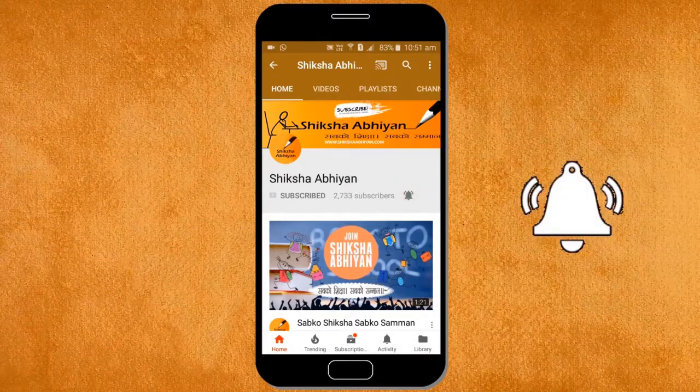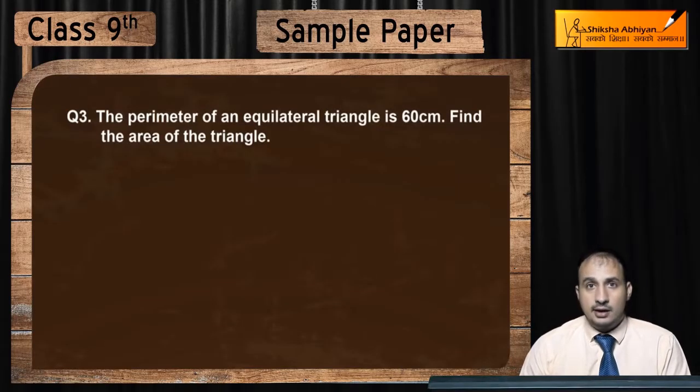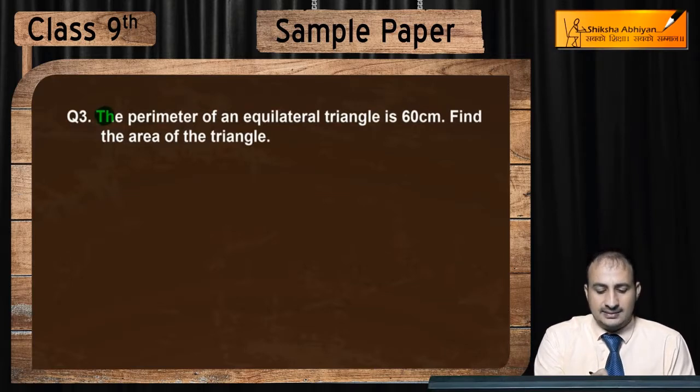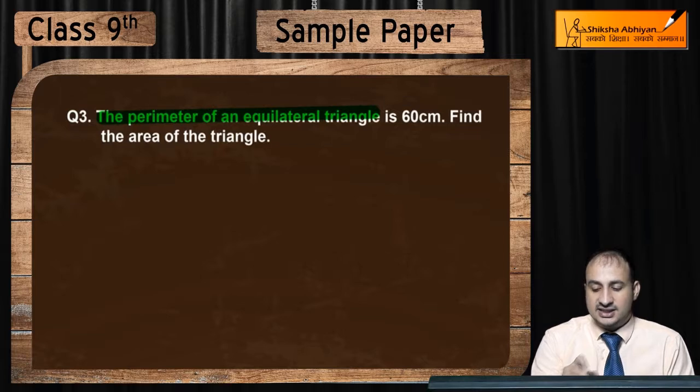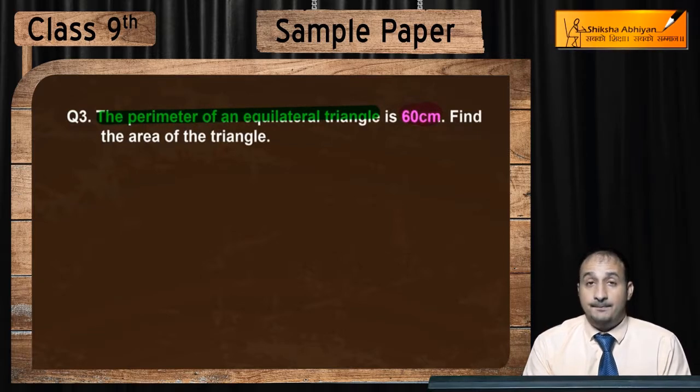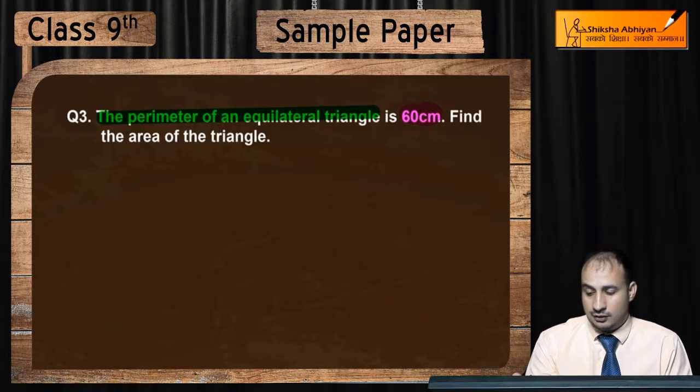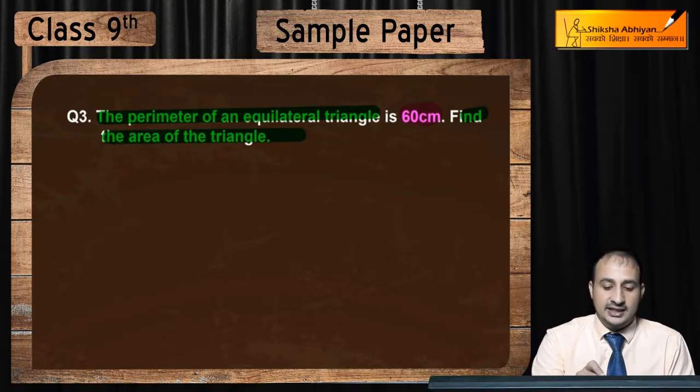Now see the third question. The perimeter of an equilateral triangle is 60 cm. Find the area of the triangle.